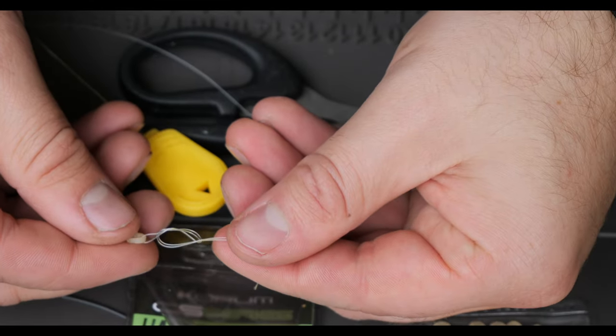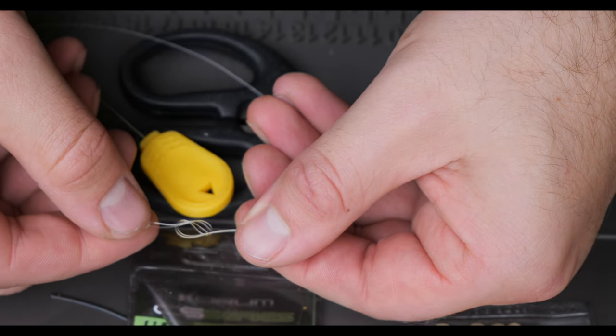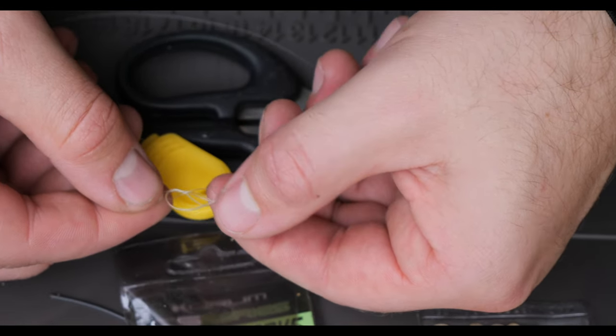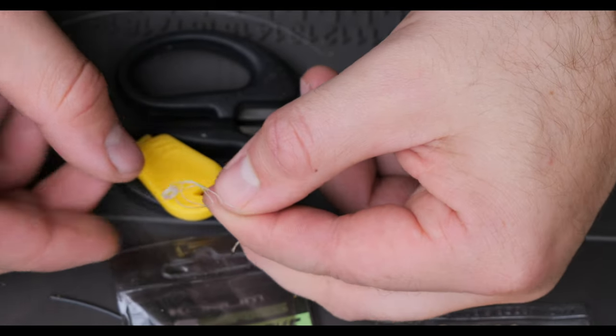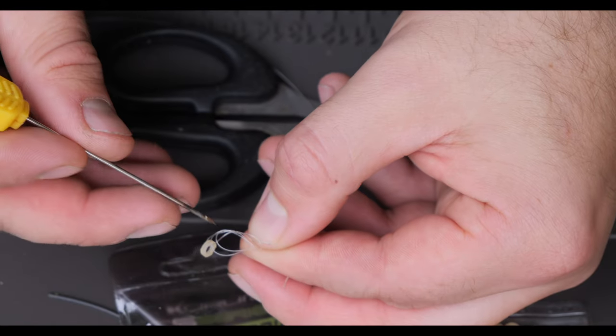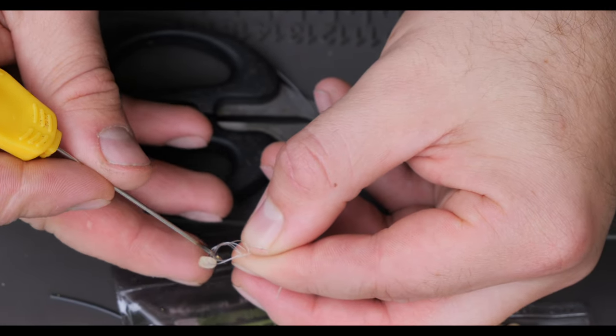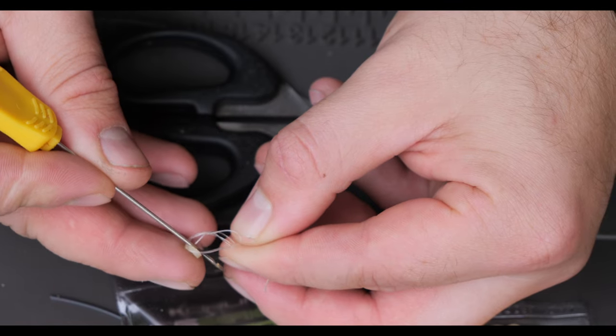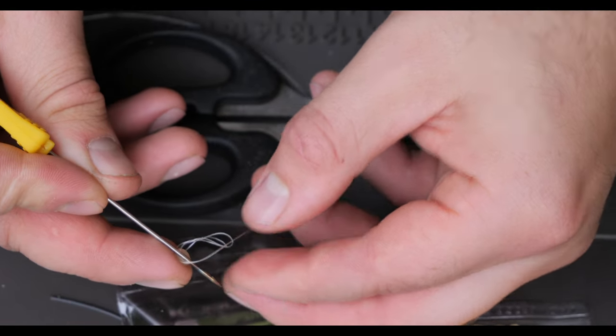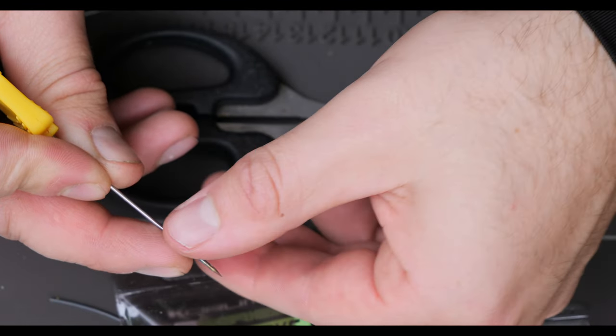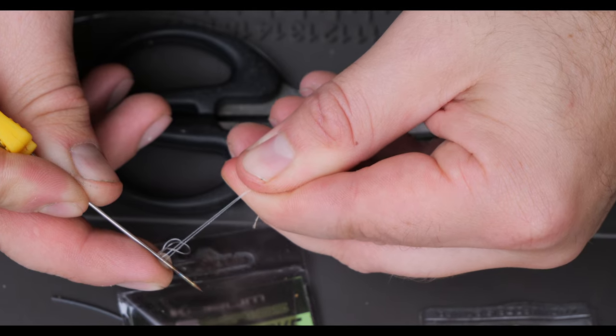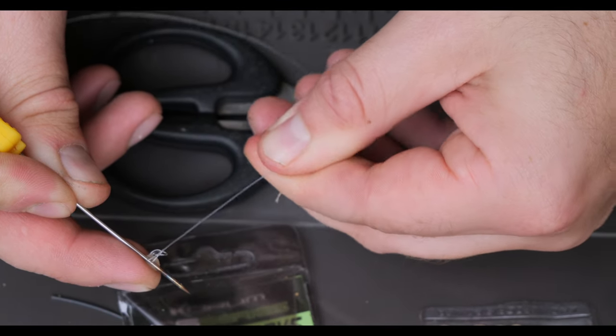There we go, can you see that? Now we don't want to pull that tight yet. What we want to do, and this makes the rig a lot neater, you want to take your baiting needle, put it through the big part of this figure of eight loop, trap the band against your finger like that, wet it, and then you want to pull the figure of eight loop knot down gently against the baiting needle.